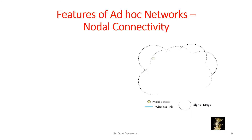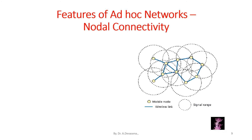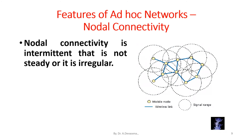Now we discuss about nodal connectivity. Nodal connectivity is intermittent — that is, it is not steady or it is irregular in ad hoc networks. The connectivity between the nodes is not consistent because it is an intermittent one.